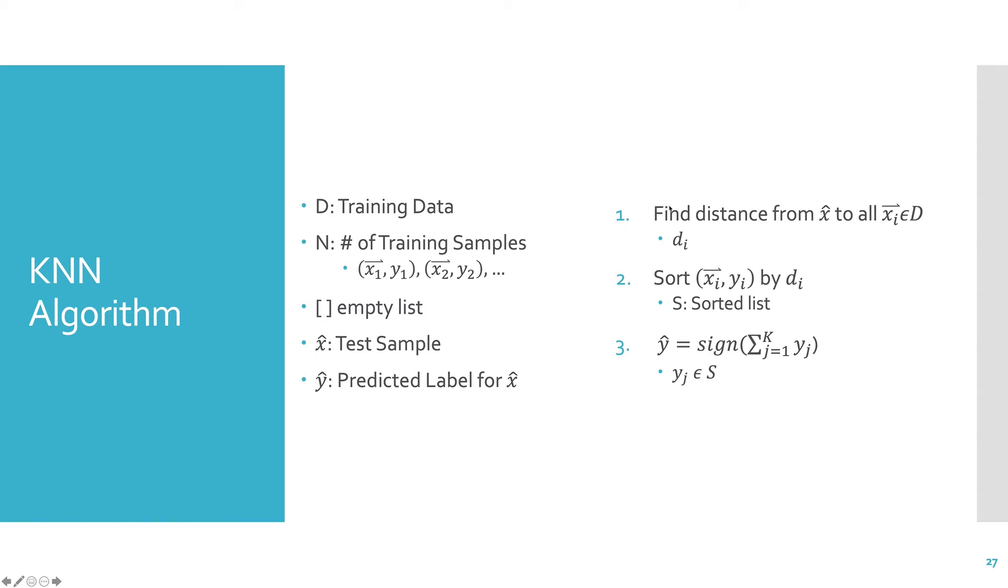Here's the algorithm. It's just three steps. Very simple. What we're going to do is we're going to take our test point, and we're going to find the distance from that point to all points in the data set, in the training data. And that's going to give us n distances, and we'll store them in some vector lowercase d. Then we're going to sort all of the points in the training data by their distances away from the test point. So we'll get closest to farthest. And then we're going to predict based on the sign of the sum of the labels of the smallest distance points.